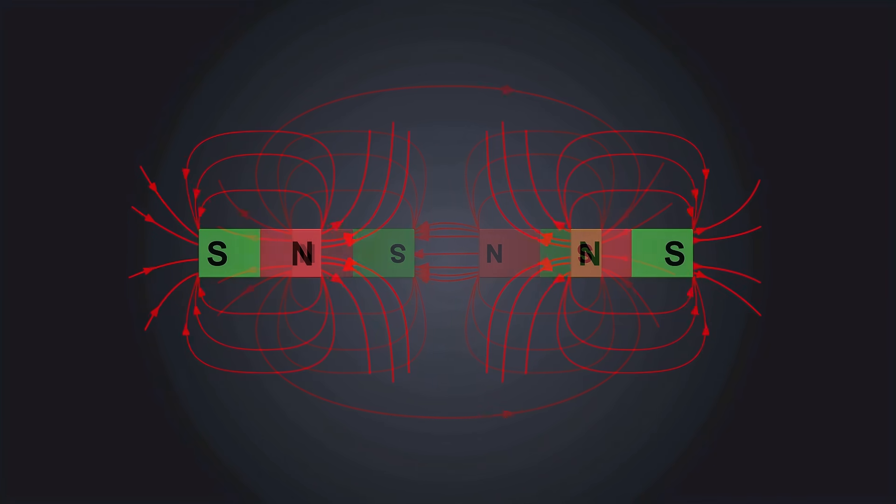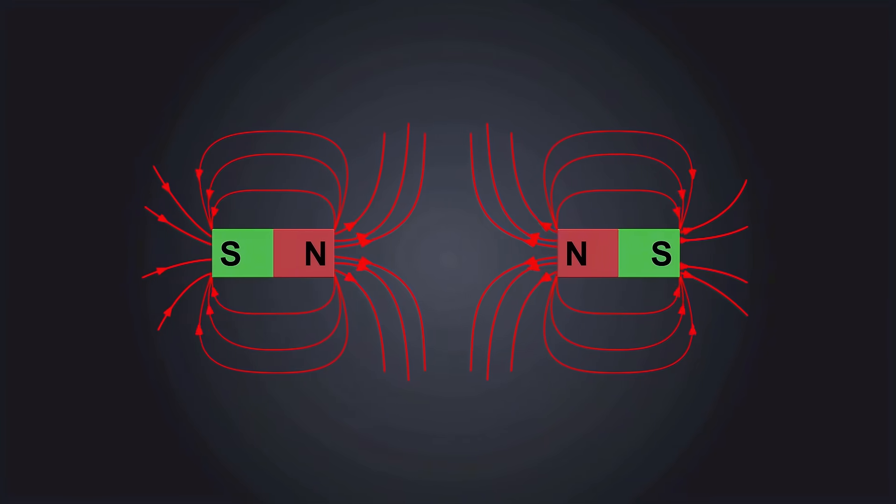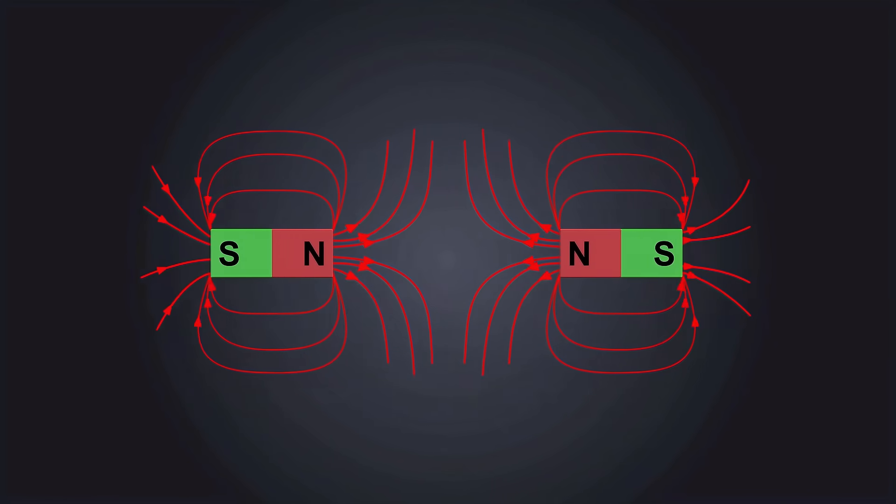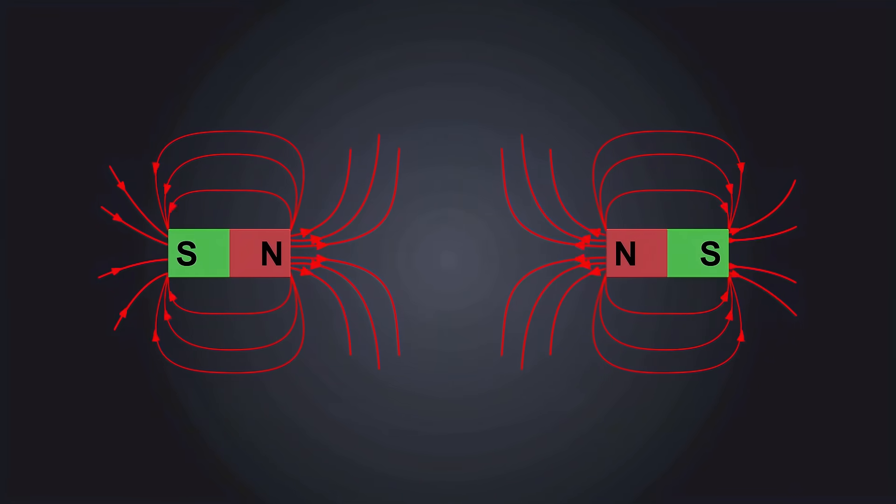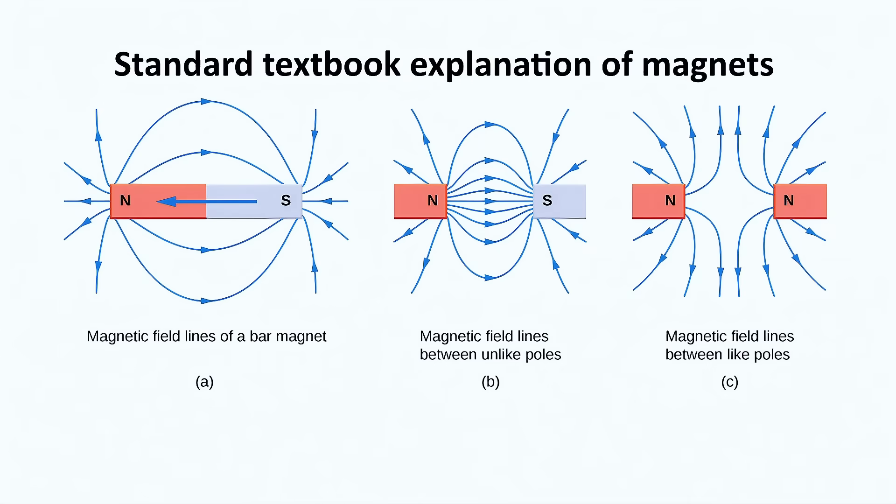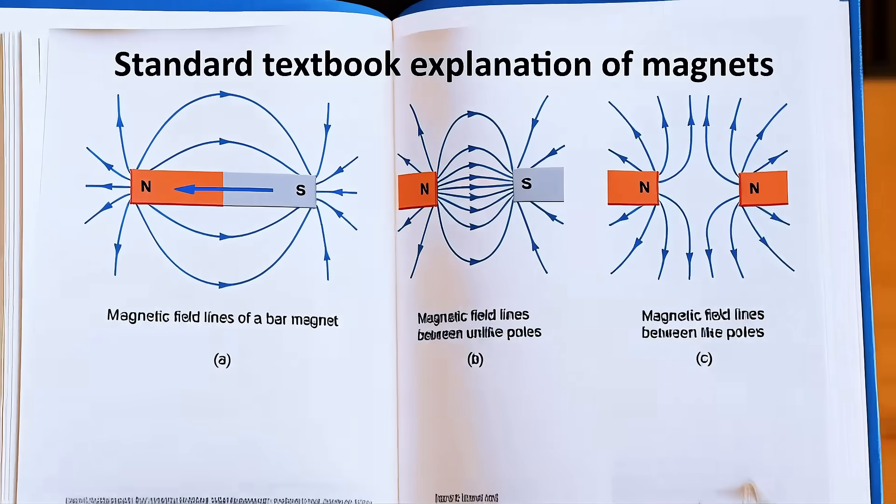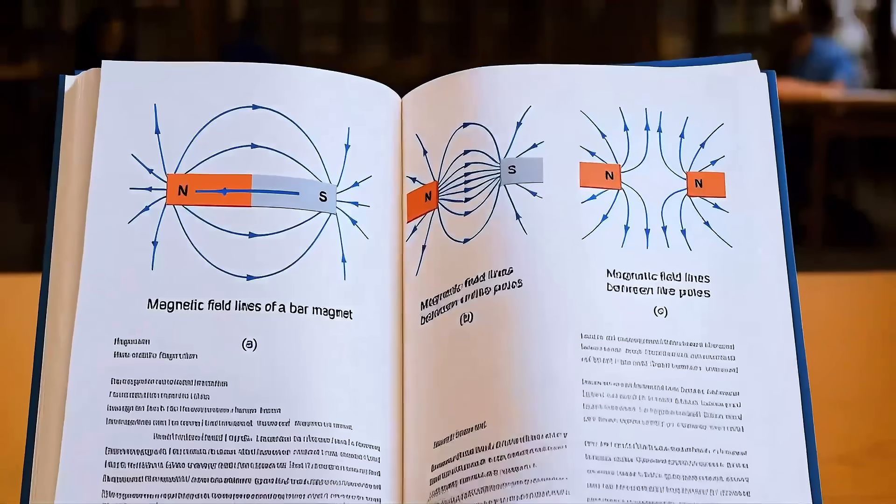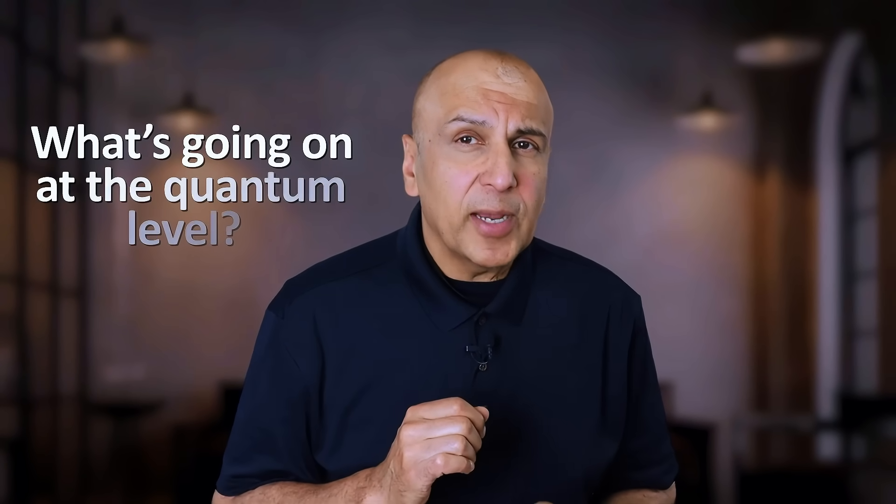Conversely, when two like poles face each other, their field lines clash. They don't flow smoothly into each other, but push against one another, creating tension or pressure that drives them apart. This is the standard explanation you will get in high school and some college courses. But since you are watching my channel, I know that like me, you would find that explanation highly lacking. What's really going on at the quantum level? So let's go real deep right now.